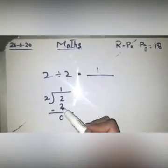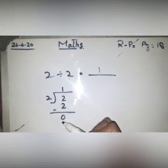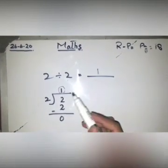2 times 1 is 2. After writing it, you will subtract the value and get the answer 0. So you have the quotient 1, and you will write the answer 1 here.